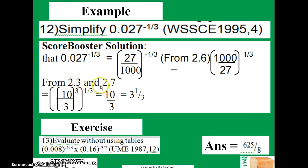You can also combine rule 2.3 and 2.7 to factorize 1000 and 27. 1000 is the same as 10 raised to power 3, and 27 is the same as 3 raised to power 3. If you put both of them together, you can have them all raised to power 3/3.